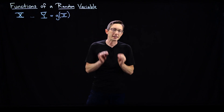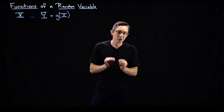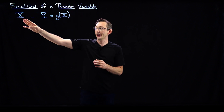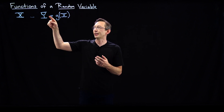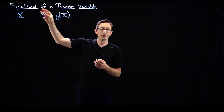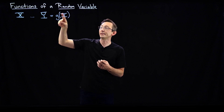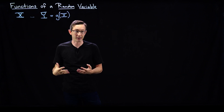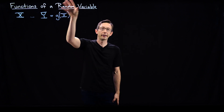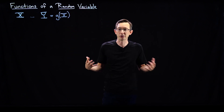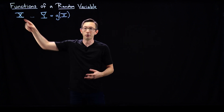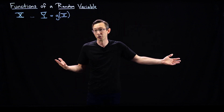Welcome back. Today I'm going to introduce the idea of building functions of a random variable x — functions like g of x. I'm going to introduce a new random variable y that is a function of x. This is a really important concept and one of the reasons we wanted to define random variables in the first place: to take that abstract step of introducing a variable so we can build functions of it.